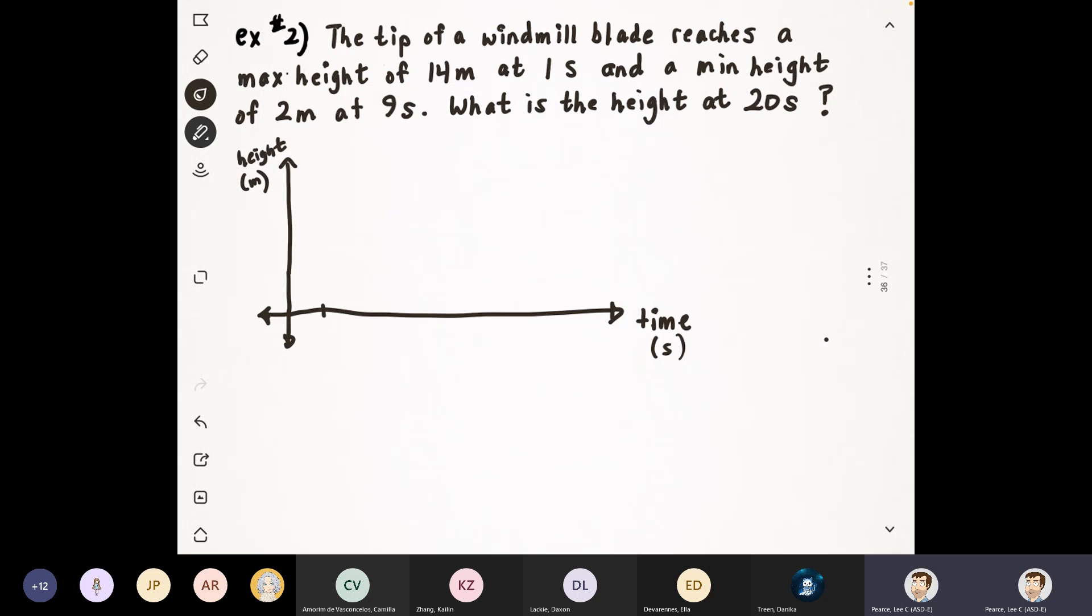We say that at one second, you reach a maximum height of 14. So we have a point right there at 1, 14. That's the maximum height. Then we have a minimum height at two meters, and that is at nine seconds. That's just two points on the graph. And that's generally what's going to happen with all these word problems - you're going to get a max and a min point. That's enough to sketch your graph because you know it's a sinusoidal function.